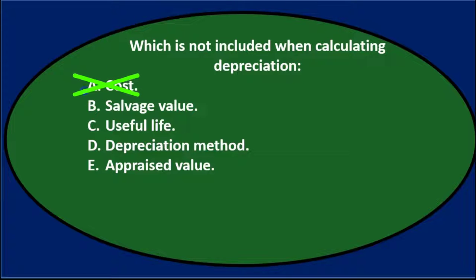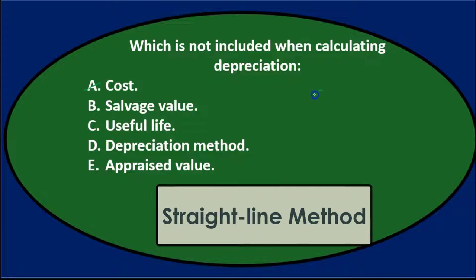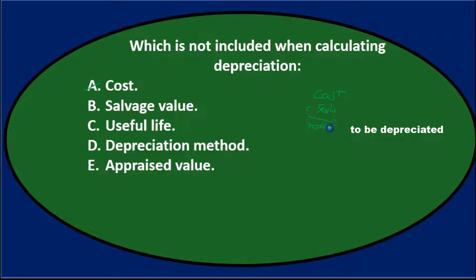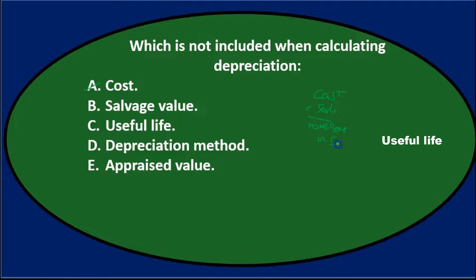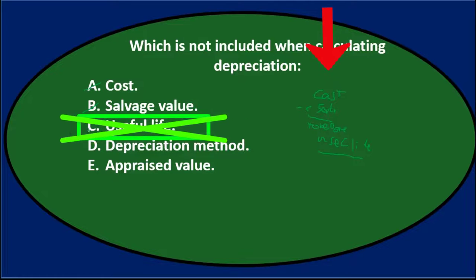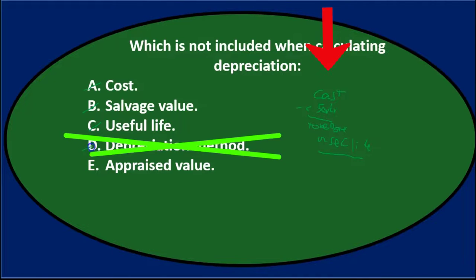The easiest way to think about this is the straight-line method: cost minus salvage value gives us the amount to be depreciated, then we divide by useful life to get the depreciation amount. So salvage value — that's in there. Useful life — we're going to need that for our calculation. Depreciation method — we're going to need some method to calculate depreciation, whether it's straight-line or another. We'll need to know that.